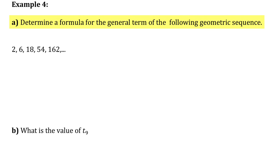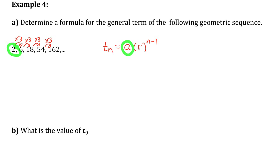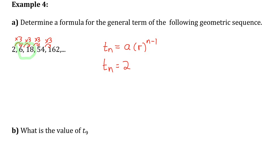In this sequence, part A says to find the formula for the general term. I notice there is a common ratio between consecutive pairs — multiplying any number by 3 gets you to the next number in the sequence. So it's a geometric sequence, and the value of any term has the format Tn equals a times r to the power of n minus 1. I substitute a equals 2 (the first term) and r equals 3 (the common ratio — 6 divided by 2 is 3, 18 divided by 6 is 3, and so on).